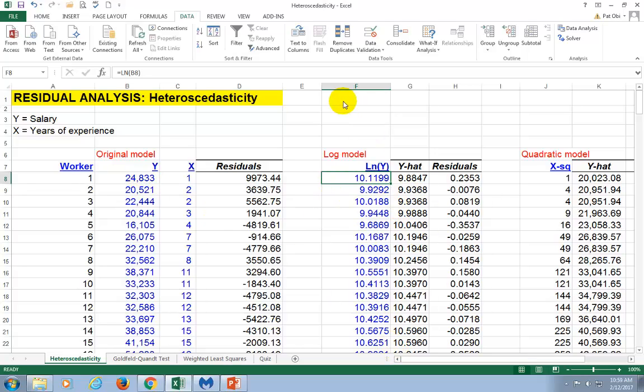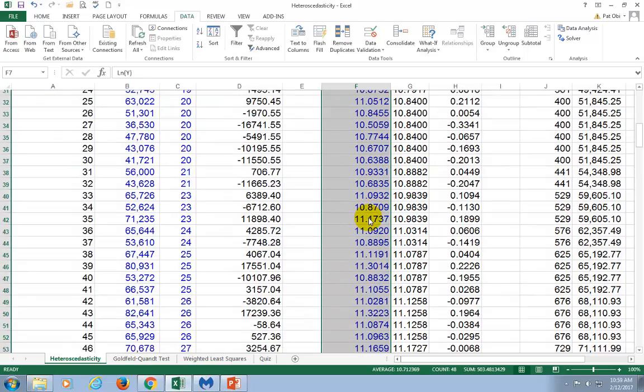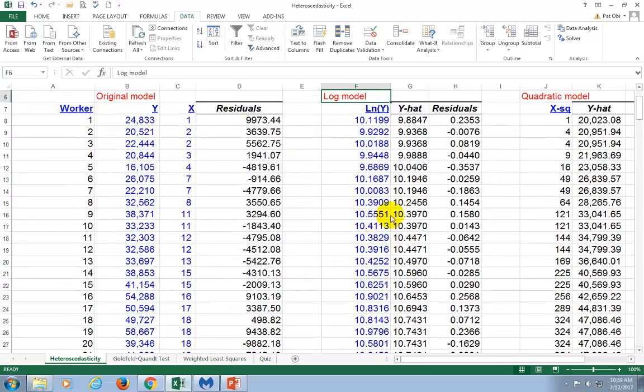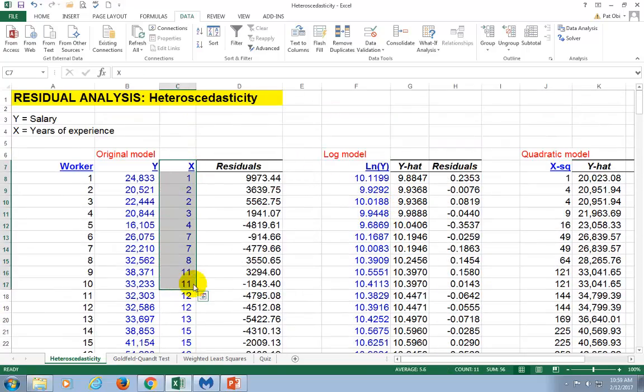When you go to run your regression, when it prompts you for Y, you highlight these values. And then when it prompts you for X, X would be the original values that you have right there. And then you're going to get your regression output.